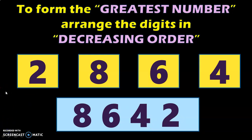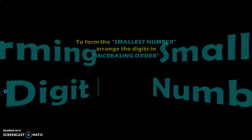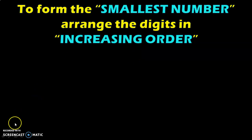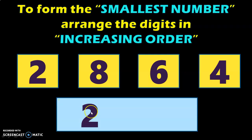Next, using this same set of four digits, let us see how to form the smallest four-digit number. The rule here is to arrange the digits in increasing order or ascending order, which means arranging the digits from small to big. So let us use the same set of four digits: 2, 8, 6 and 4. The smallest digit given is 2, so first write down number 2. The number which is bigger than 2 is 4.